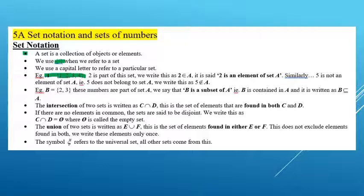So 2 is a part of the set. We write this as 2 with this symbol that stands for 'is an element of'. So we say 2 is an element of set A. Similarly, 5 is not an element of set A — 5 doesn't belong in that set. So we use the element symbol with a slash through it, meaning 'not an element of'.